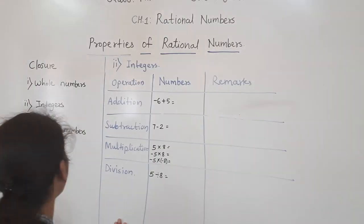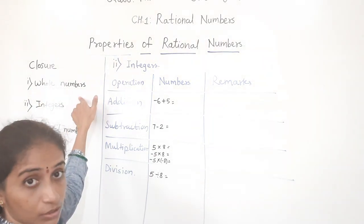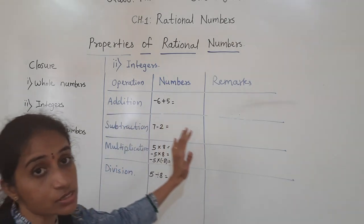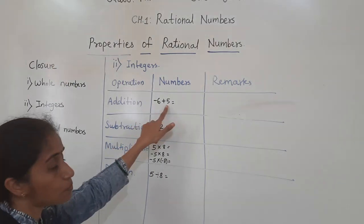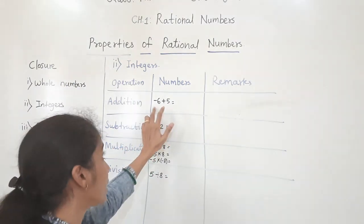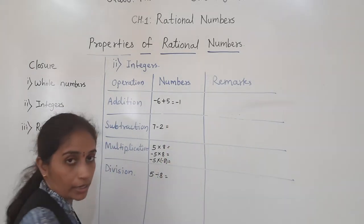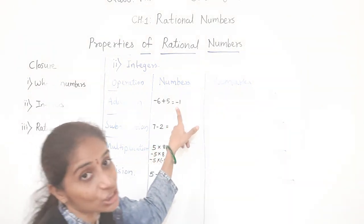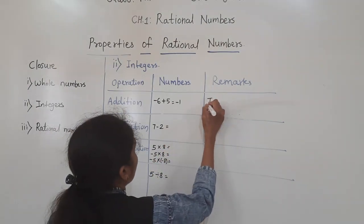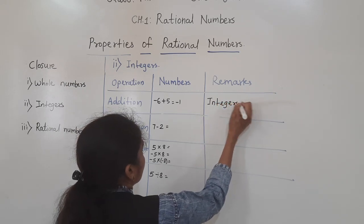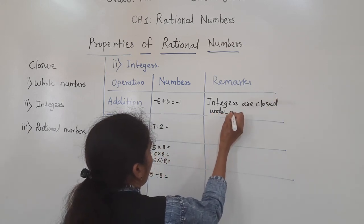Now let's learn closure property for integers. We already saw closure property for whole numbers. Now we will see if it works for integers. First operation: addition. Minus 6 plus 5: minus plus gives minus, so the answer is minus 1. Is minus 1 an integer? Yes. Integers are closed under addition.